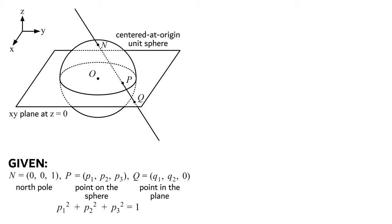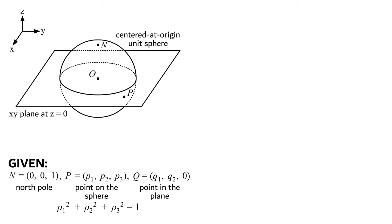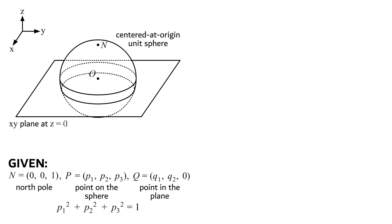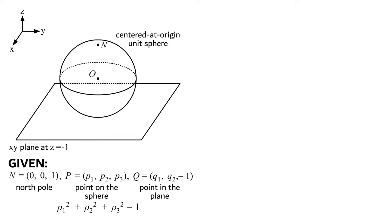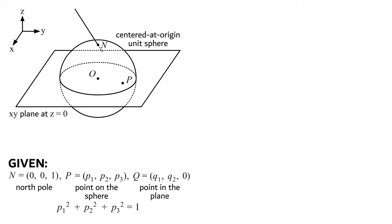Placing this plane so that it slices through the equator makes it so that any point p on the upper half of the sphere gets projected outwards to q, any point p on the lower half of the sphere gets projected inwards to q, and any point along the equator gets projected to itself. However, in a case such as the one where the plane is below the sphere, any point p on the sphere is projected outwards to point q in the plane, except when p equals the south pole, in which case it just gets sent to itself.